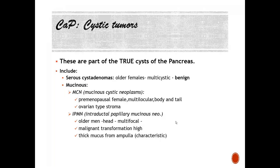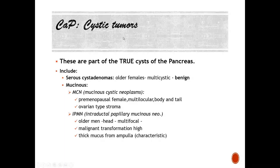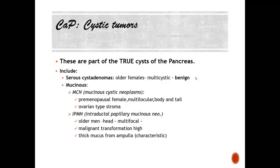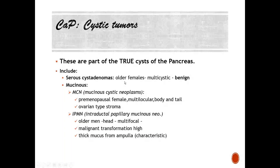The cystic tumors of the pancreas are part of true cysts, as opposed to pseudopancreatic cysts, which are by far the commonest cystic lesion. True cysts include neoplastic types: serous cystadenomas — multicystic, more common in females, usually benign — and mucinous types including mucinous cystic neoplasm (MCN), usually in pre-menopausal females, and intraductal papillary mucinous neoplasm (IPMN) found predominantly in older males. Malignant transformation in IPMN is high.